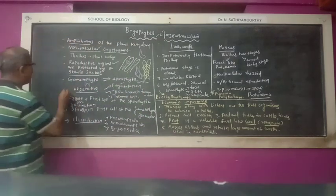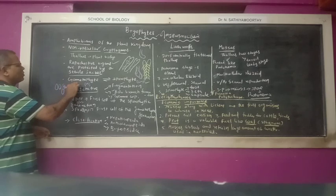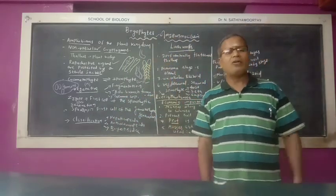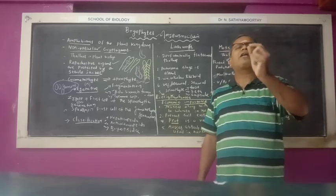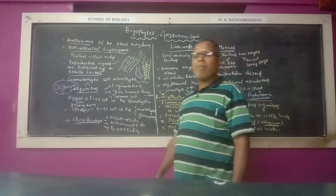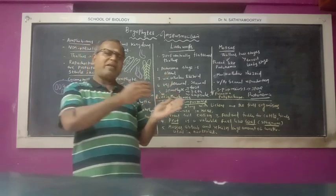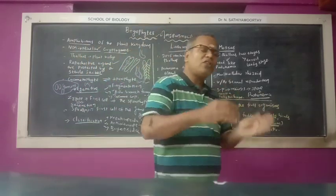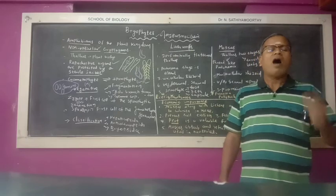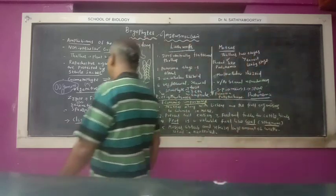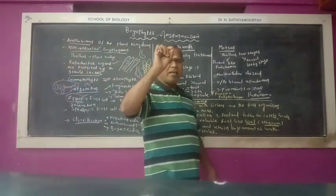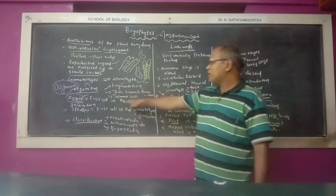In sexual reproduction, only oogamous kind of sexual reproduction takes place. The male reproductive structure is said to be antheridium, and the female reproductive structure is said to be archegonium or oogonium. From the antheridium, biflagellate antherozoites are produced, and the archegonium contains an egg or ovum. Water is absolutely essential for fertilization, and it results in the formation of a diploid cell called zygote. The zygote is the first cell of the sporophytic generation.